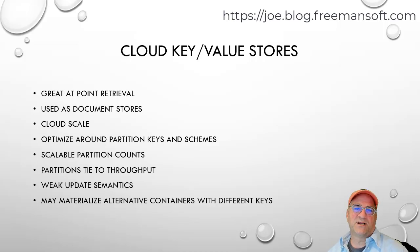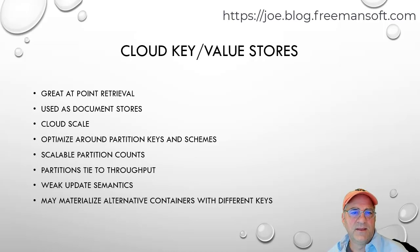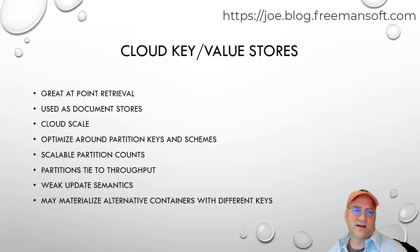Talking about cloud key-value stores: they're great at point retrieval, which is why we sometimes end up doing different materializations with different partition keys. They can be used as document stores — you can put hierarchical complex documents in. We may still do some denormalization. They go to cloud scale, which is pretty cool — a lot of databases can only scale up, but cloud databases are built to scale out, kind of like a data lake. They're basically optimized around key retrieval and partition keys. You may end up with different schemas — basically different document styles in different places for different queries, optimized for your query patterns.